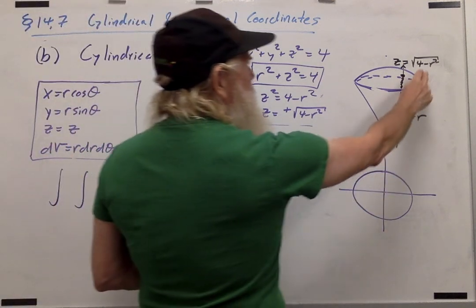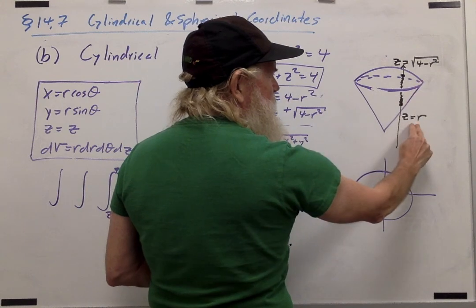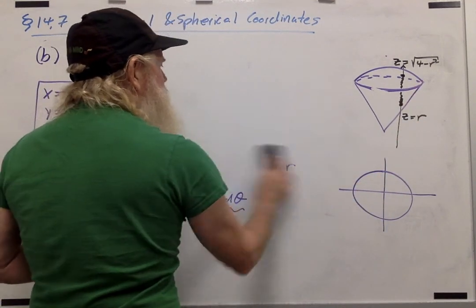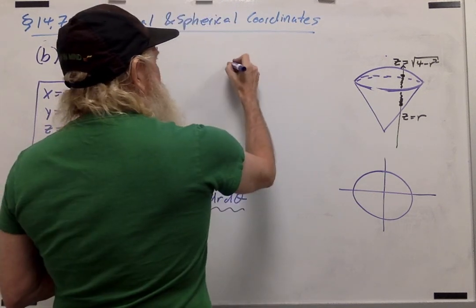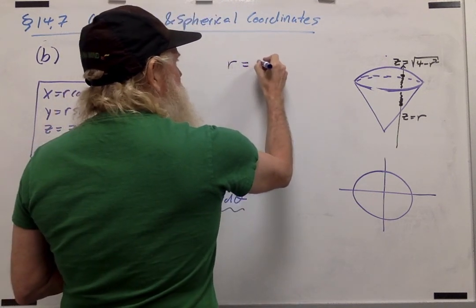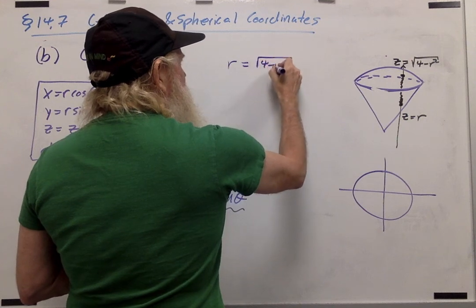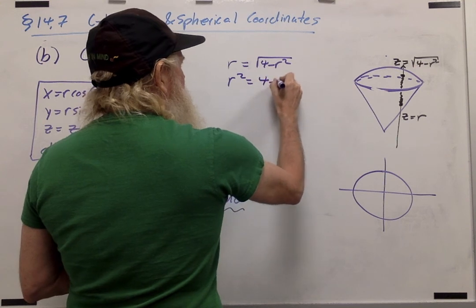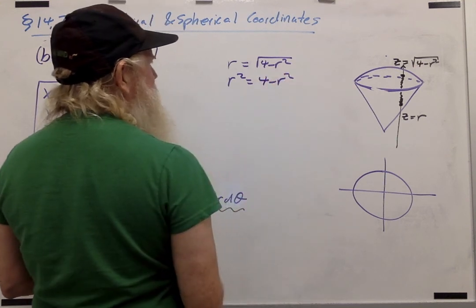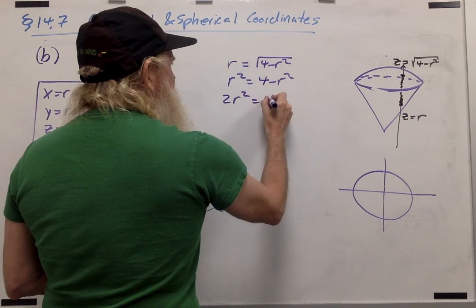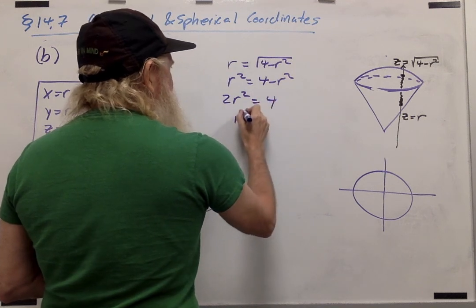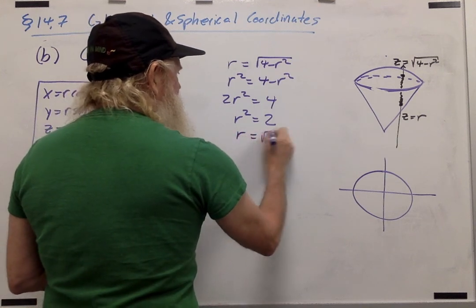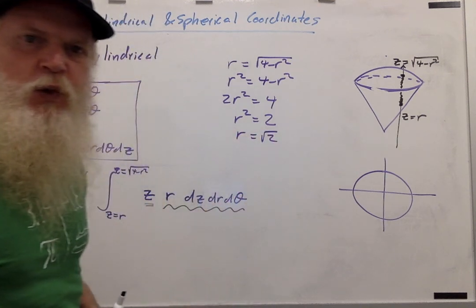So let's find out where the sphere, z equals square root of 4 minus r squared, intersects the cone, z equals r. And we'll do that by setting the two equations equal to each other. So we have r equals the square root of 4 minus r squared. So r squared is 4 minus r squared, squaring both sides, adding r squared to both sides, and dividing both sides by 2, I get that r squared equals 2. So r equals the square root of 2.